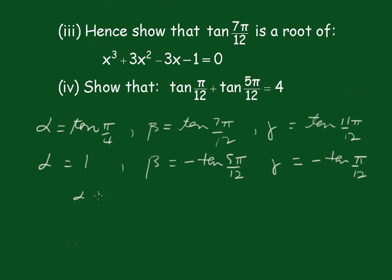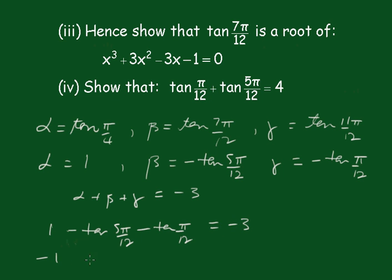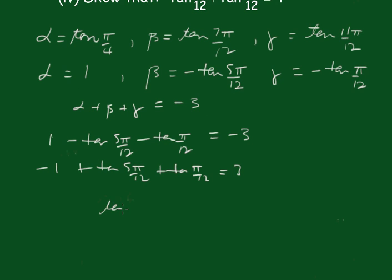The sum of the roots α + β + γ equals −3 (from the cubic). Therefore 1 − tan(5π/12) − tan(π/12) = −3. Multiplying throughout by −1: −1 + tan(5π/12) + tan(π/12) = 3. Therefore tan(5π/12) + tan(π/12) = 4, which is the required result.